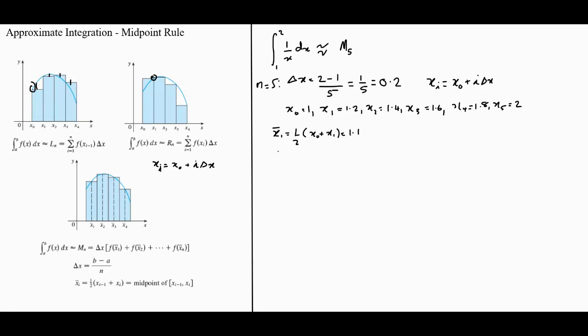The other points are going to be x2 bar is equal to, it's going to be 1.3, x3 bar is going to be 1.5, x4 bar is going to be 1.7, and x5 bar, because n is 5, is going to be 1.9.